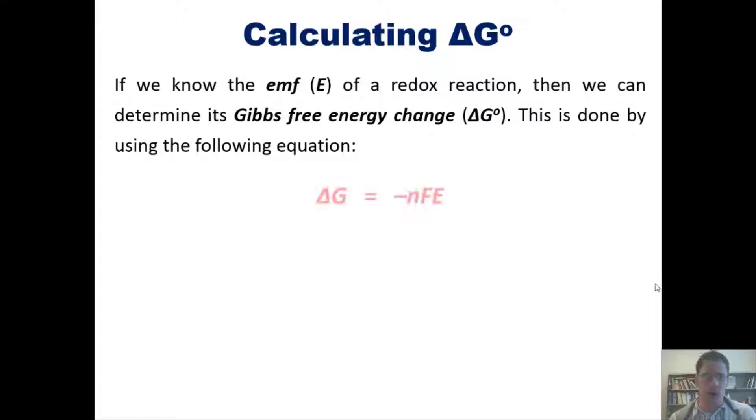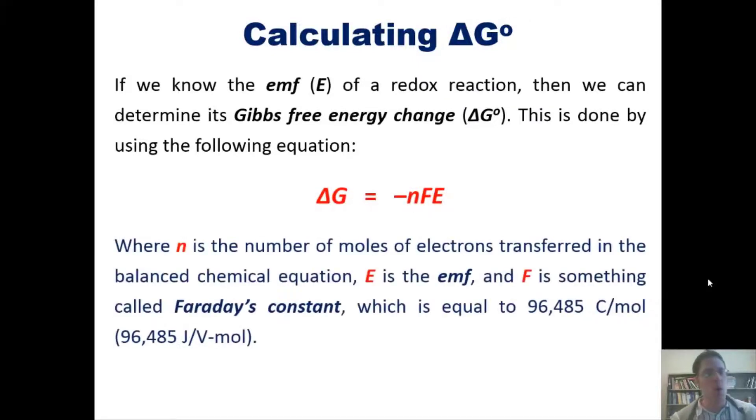This is done by using the following equation where n is the number of moles of electrons transferred in the balanced chemical equation, E is the EMF, and F is something called Faraday's constant which is equal to 96,485 coulombs per mole, which is the same thing as joules per volt mole.